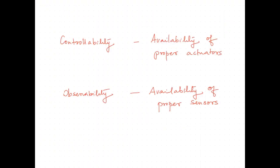Finally, we conclude the session. Controllability basically gives the availability of proper actuators, and observability basically checks the availability of proper sensors. If these two are present, then any control design is practically possible. Controllability and observability thus remain as the basic pillars of control design.